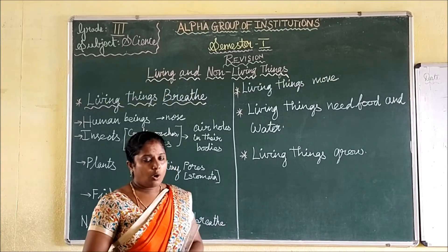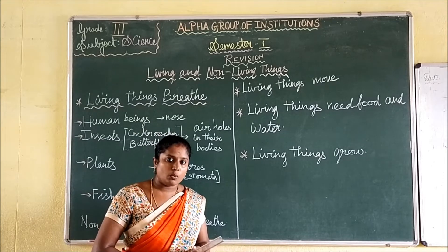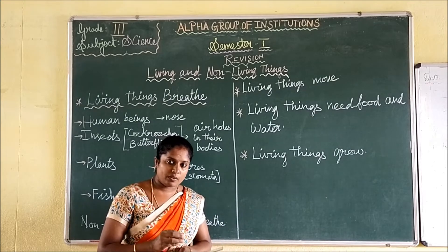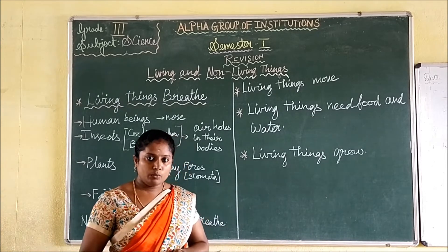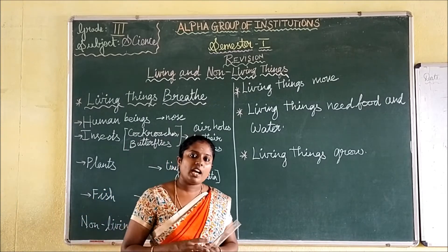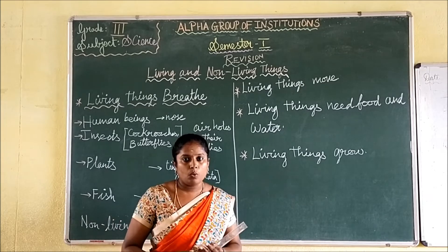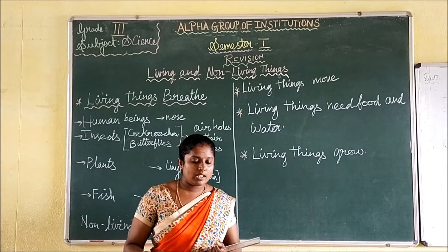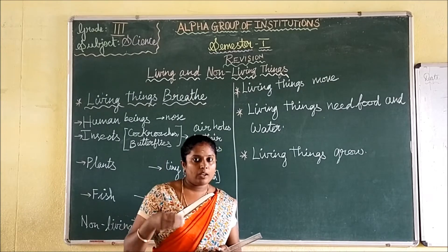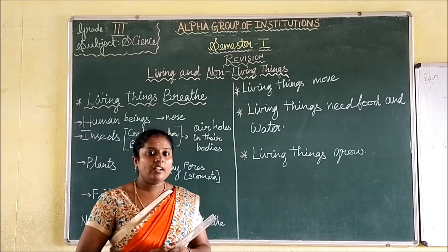Next, living things grow — all living things grow. Human beings grow from a child to an adult. We take some time to grow. Likewise, animals and plants grow too — plants grow from a seed to a big plant or tree. So all living things can grow.